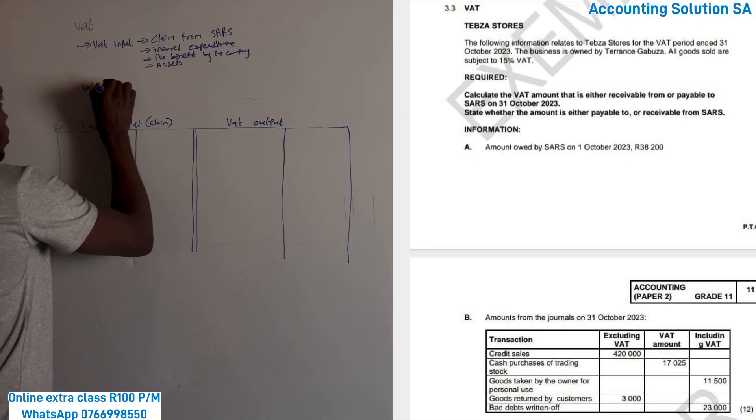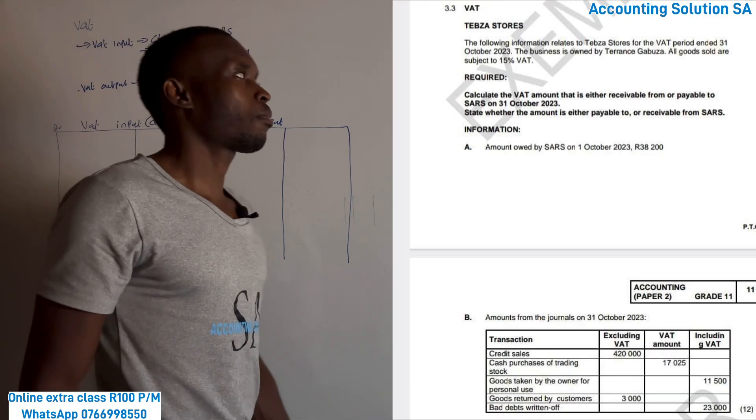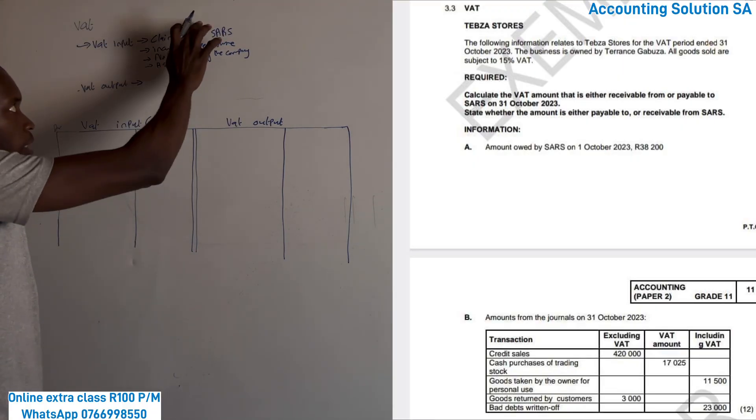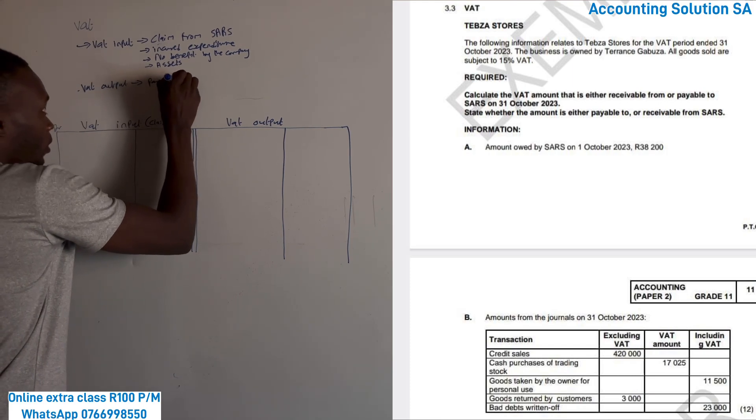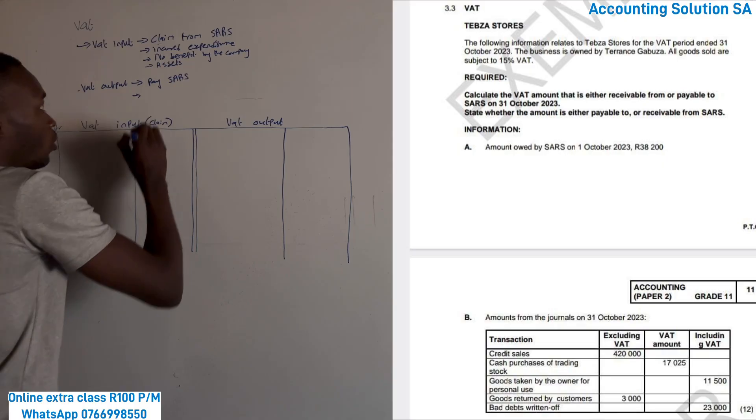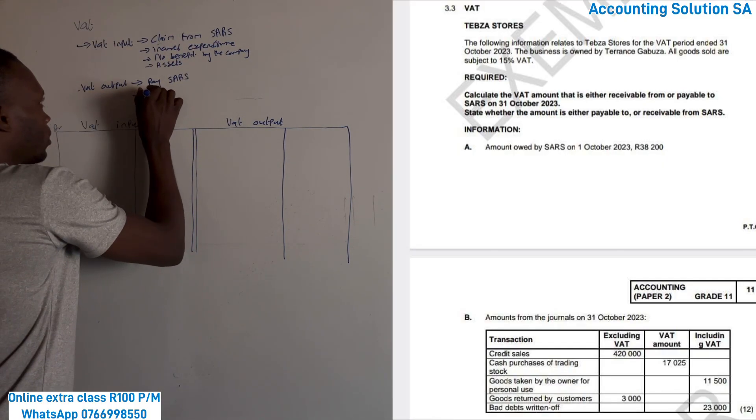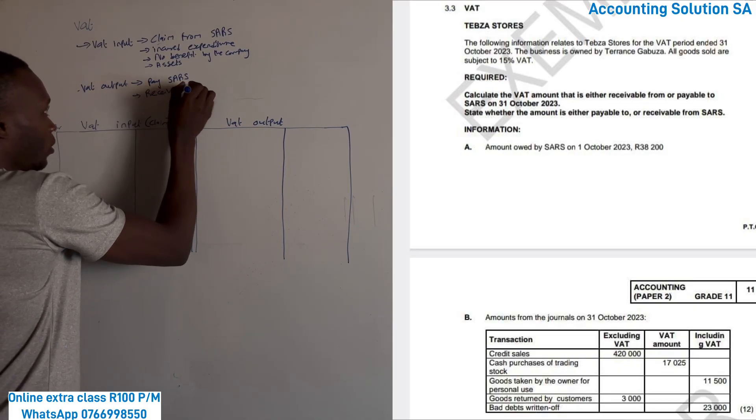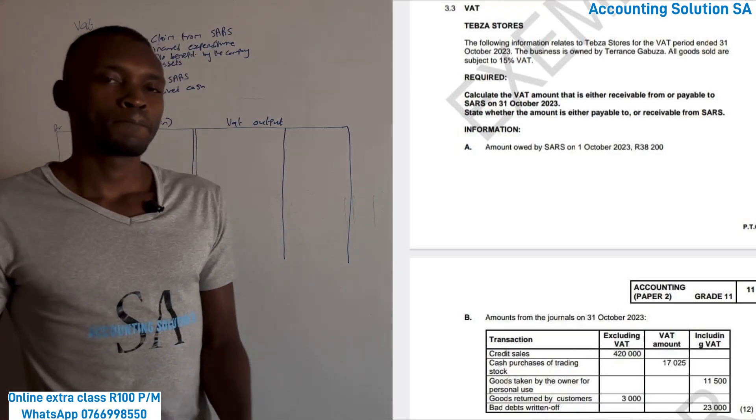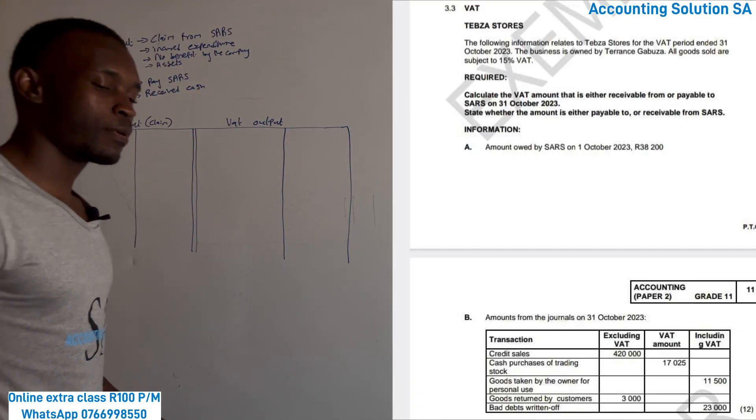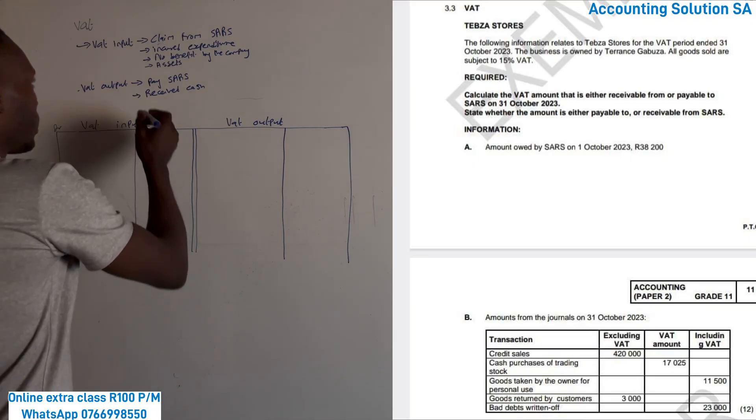Now let's go to that output. That output is opposite of whatever we were saying. Number one, instead of claiming to SARS, now we are paying SARS. Number two, we didn't incur expense but we receive cash. It can be either we receive cash through sales. When we sell to our customer, it doesn't matter whether it's cash or credit. As long as we sell, we have to pay SARS.